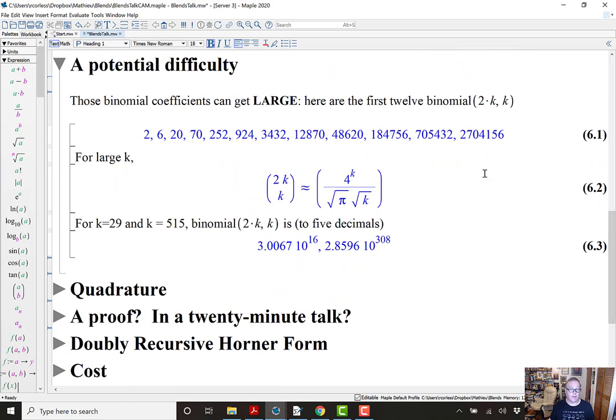There is a potential difficulty. Those binomial coefficients can get large. Here's the first 12. They go from 2 up to more than 2 million, almost 3 million. And, for large k, (2k choose k) is approximately 4^k divided by √(πk). So, these things grow rather quickly. For k equals 29 and k equals 515 in the above formula, it exactly works out to bigger than the reciprocal of the machine epsilon in the first case and bigger than overflow in double precision in the second case. So, we're going to have a limit on the size of the grade of the polynomial so we can use. But, it's going to turn out to be actually pretty good.